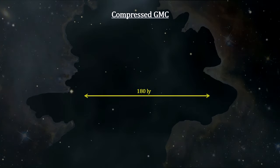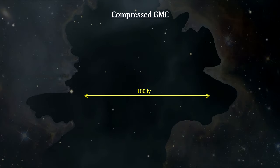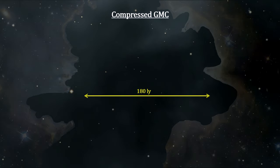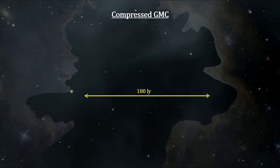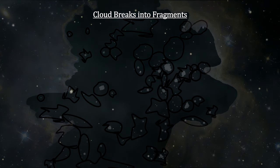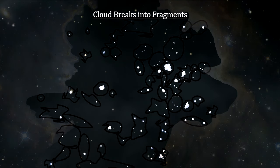In our example, the cloud has collapsed to a 180 light-year diameter. Observations and computer simulations indicate that such a compression would lead to the cloud breaking up into fragments of various sizes and shapes within 2 million years.